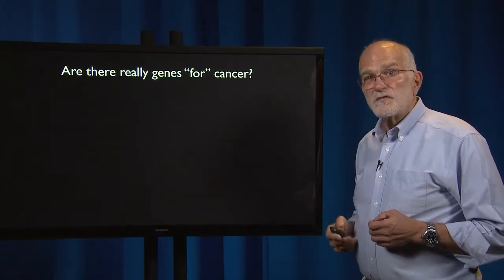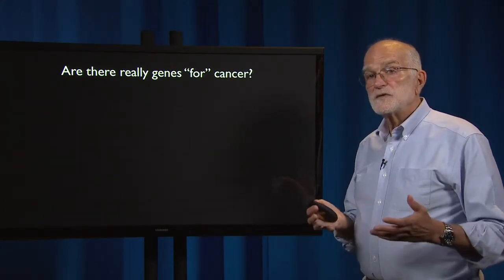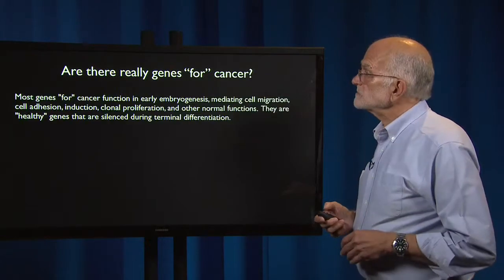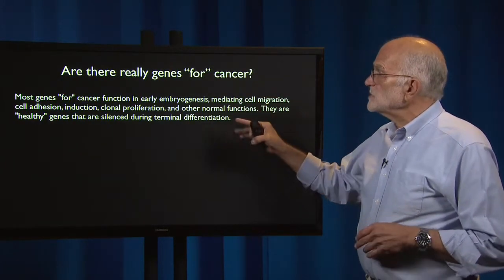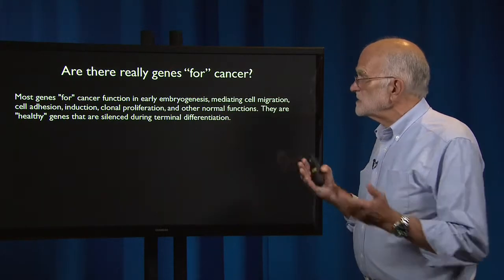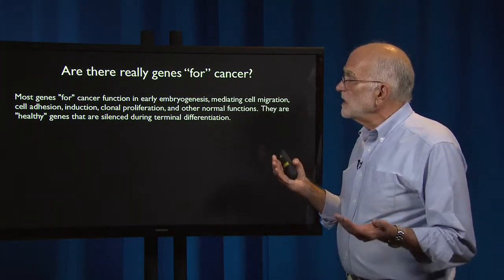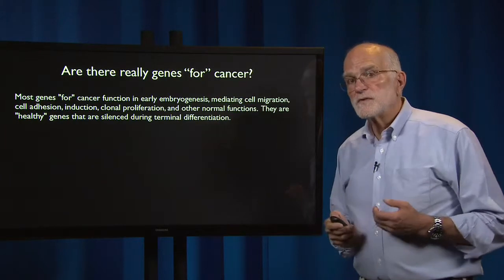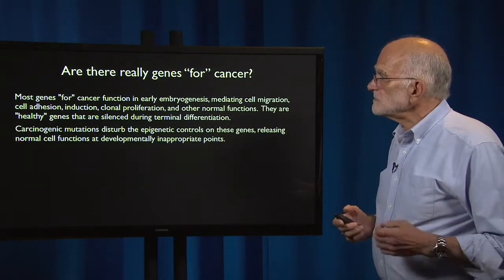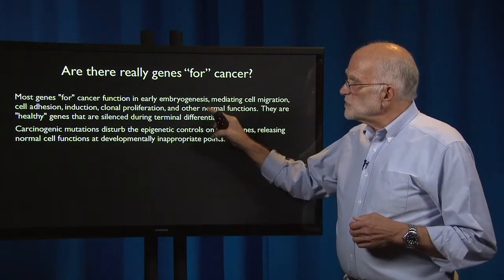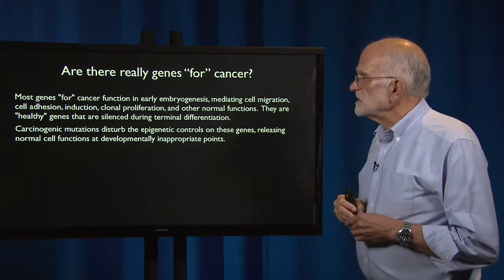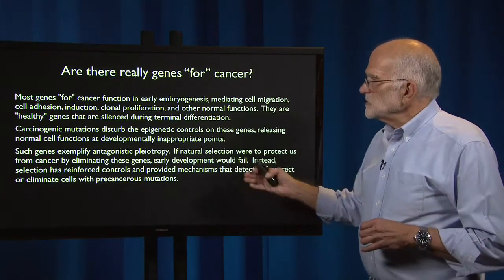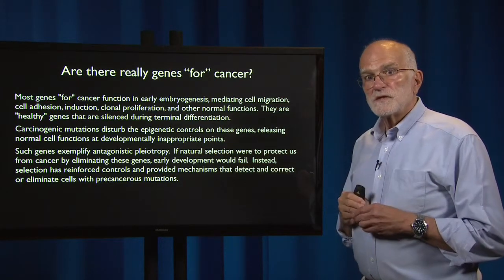Are there really genes that are for cancer? There aren't really any genes designed to produce cancer. There are genes, mutations in which can lead to cancer. Most genes involved in cancer actually function in early embryogenesis — they mediate cell migration, cell adhesion, induction, clonal proliferation, and other normal functions. They are healthy genes that are turned off during terminal differentiation of tissue. It is carcinogenic mutations that disturb the epigenetic controls on these genes that release normal cell functions at developmentally inappropriate points. So these genes are examples of antagonistic pleiotropy.